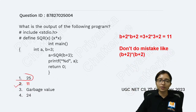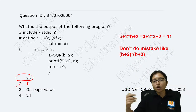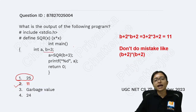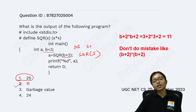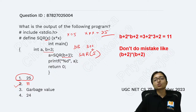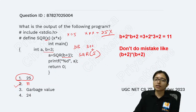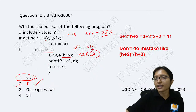The correct answer is 11, but most students will make a mistake and choose 25. This is a very common mistake. You will think that b equals 3, so b plus 2 means you are sending sqrt(5), doing 3 plus 2 equals 5, then x equals 5, and x multiplied by x equals 25. But that is totally wrong — 25 is not the answer. The answer is 11.